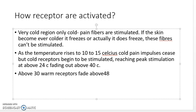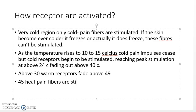Warm receptors are stimulated between approximately 30 and 49°C, with activity beginning around 30°C and fading above 49°C. Above about 45°C, heat pain fibers are stimulated. Paradoxically, cold fibers are also stimulated again at these very high temperatures, possibly because of damage to cold endings caused by excessive heat.